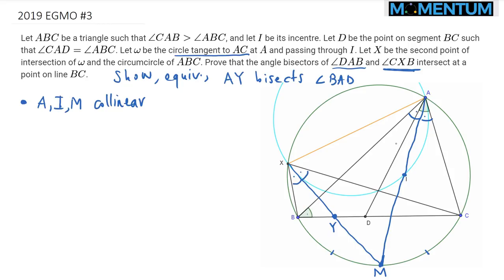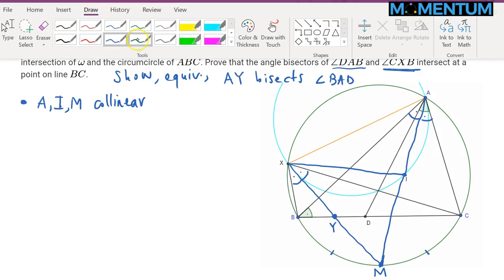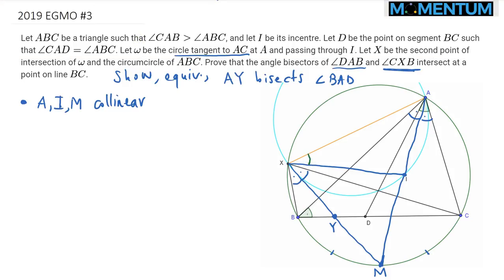Once you make this observation, all the angle chasing that follows will be aimed at proving that AIYB is a cyclic quadrilateral. After establishing that, it's quite easy to conclude the proof. So let's proceed — let's focus on angle AXI, which I'll mark in green.